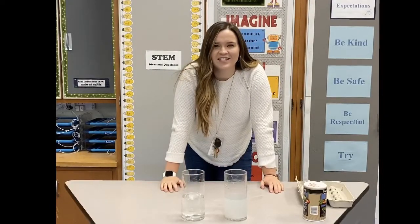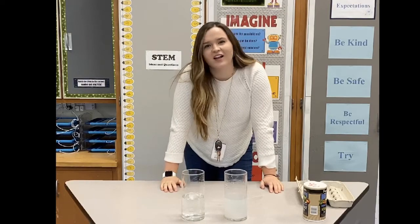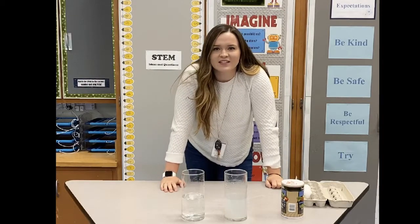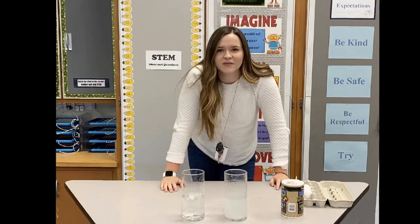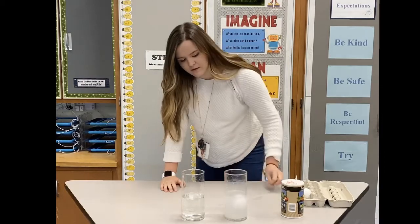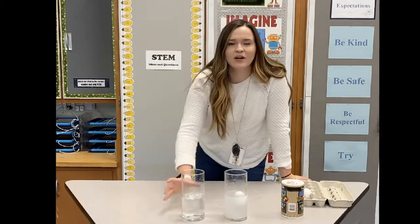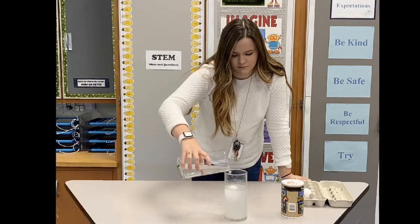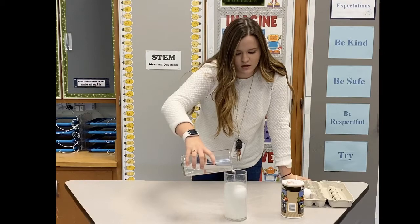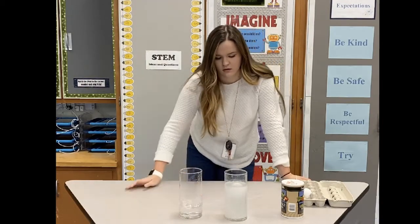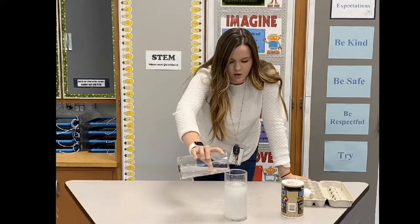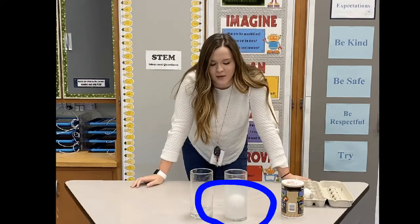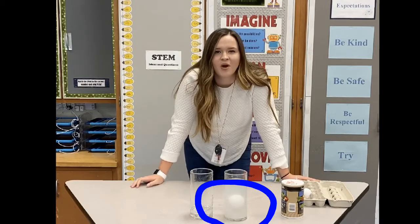I challenge you to try our egg density experiment at home. Remember, you'll need a glass of freshwater, a glass of saltwater — and it takes a lot of salt — and an egg. If you're looking for an extra challenge, try this: use about half the amount of saltwater and put your egg in. You'll see it's floating at the top. Now, carefully pour equal amounts of freshwater on top — do it slowly. Now you'll see my egg is floating in the middle of my cup. It's not at the top, but it hasn't sunk to the bottom. Why do you think that's happening?